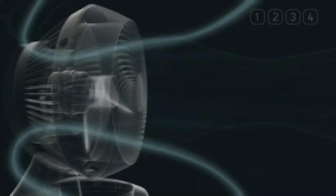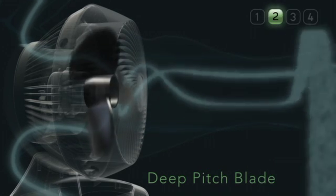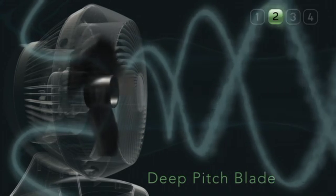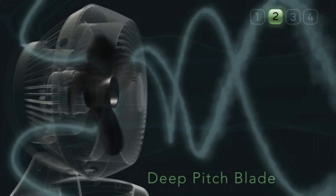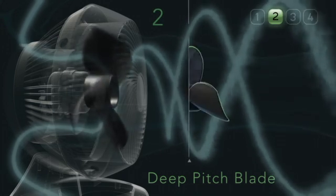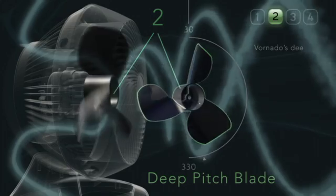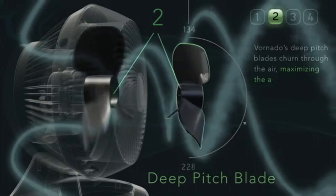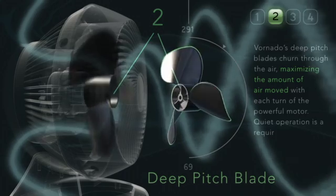Vornado uses what is called a deep pitch blade, the second key element in vortex action. Deep pitch refers to the blade's wide, heavily contoured design. Deep pitch blades churn through the air, increasing the amount of air moved with each turn of the powerful motor.